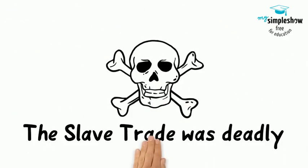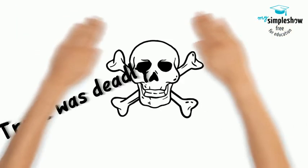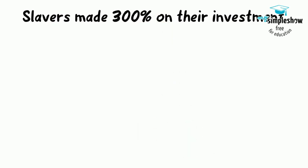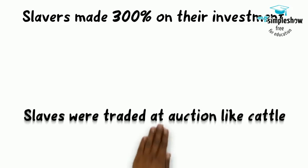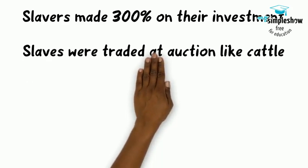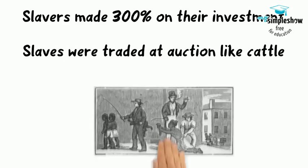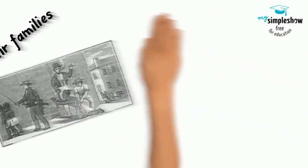Not only did countless Africans die in the slave trade, but 10% of Europeans who went to work in the trading houses died of tropical diseases. Despite the death toll, slavery turned out to be very profitable for the Europeans, netting investors 300% per trip. More slaves were brought to the fort by slave hunters, where values were then set on everybody based on body type, sex, and age.